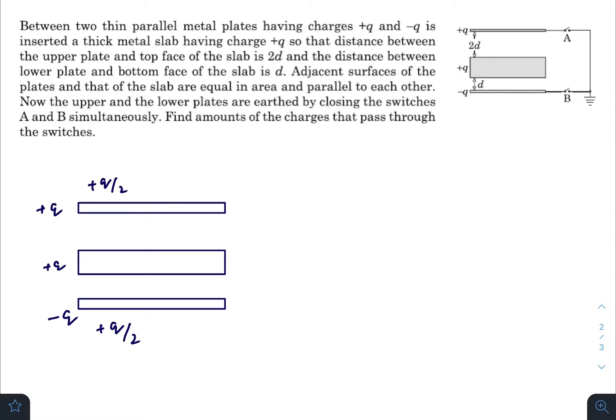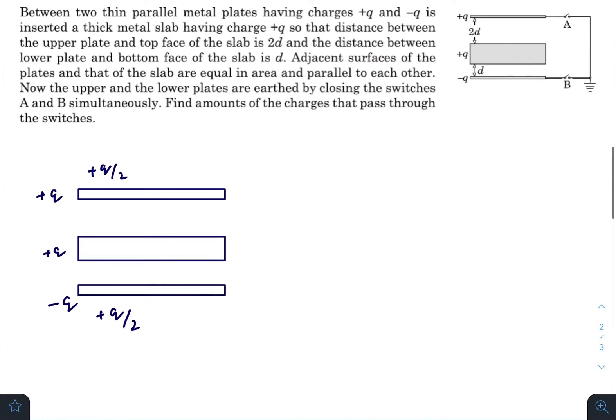Now we can balance the charges. If there is plus q by 2 here, there will be plus q by 2 here, so minus q by 2 here and 3q by 2 here and minus 3q by 2. So this will be our charge distribution before turning on the switch.